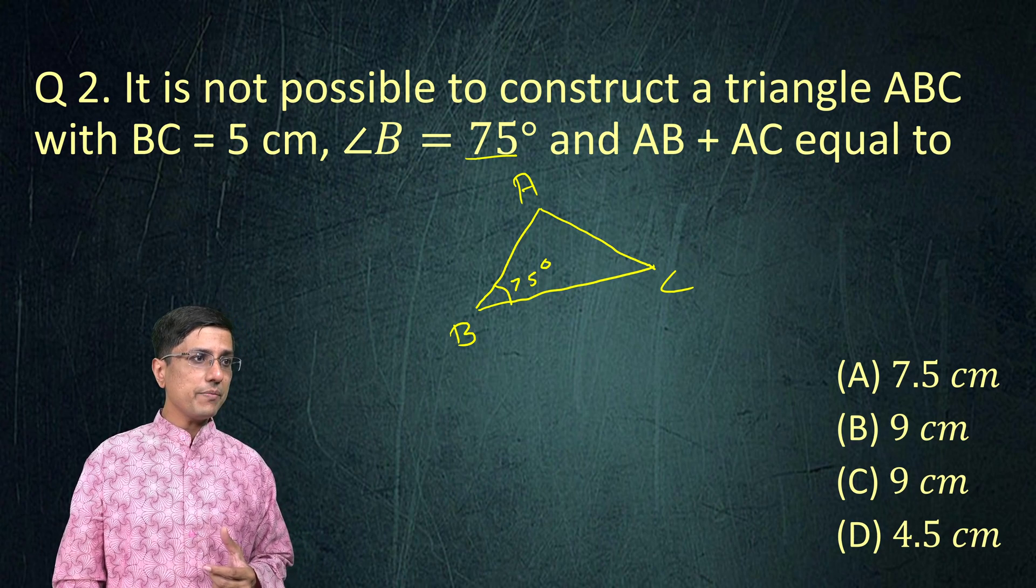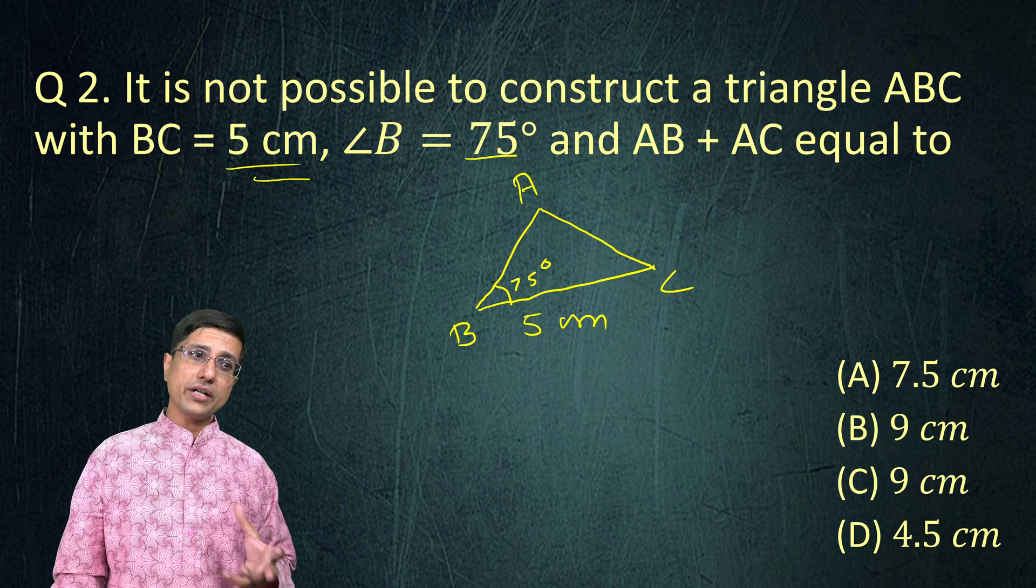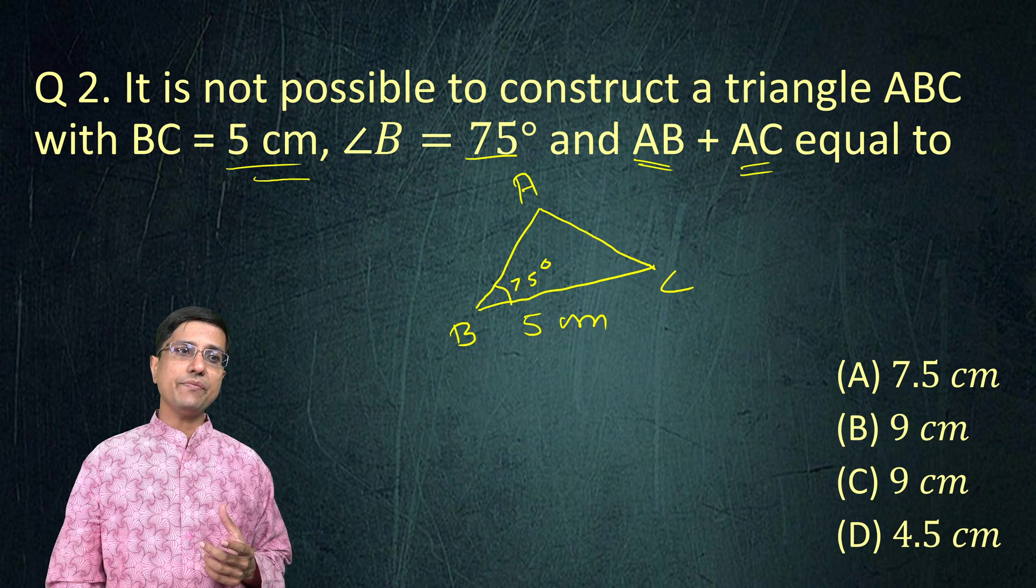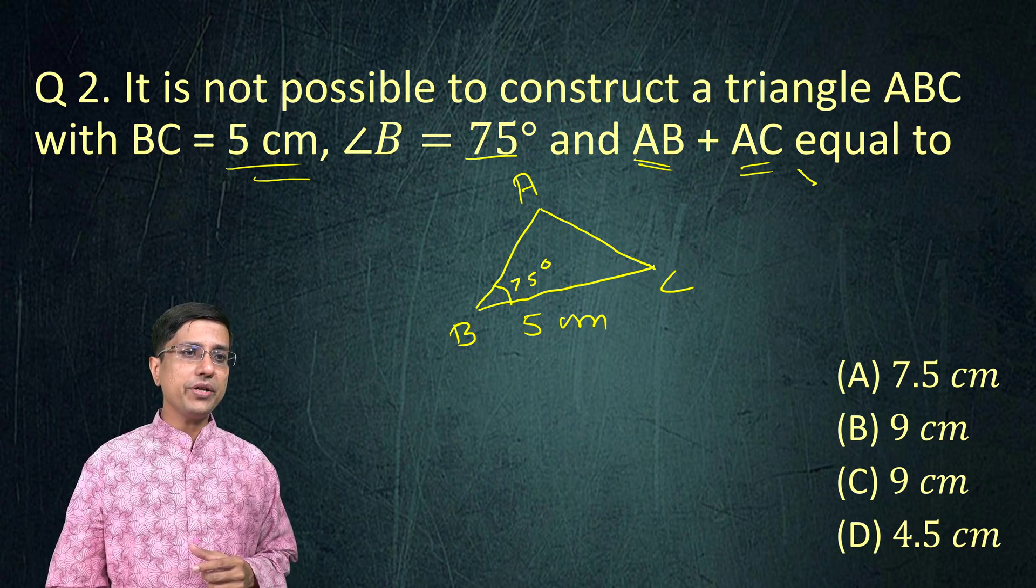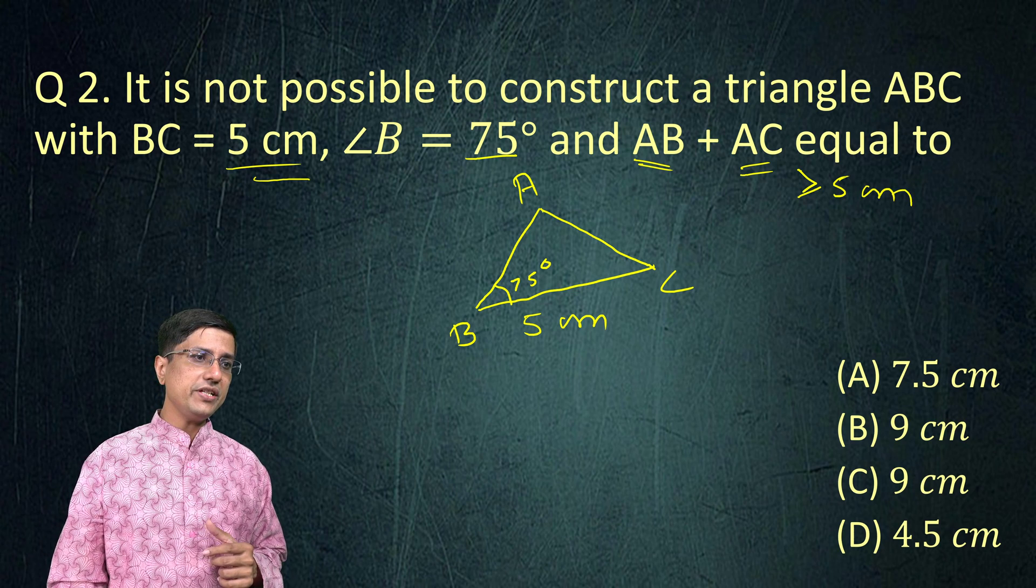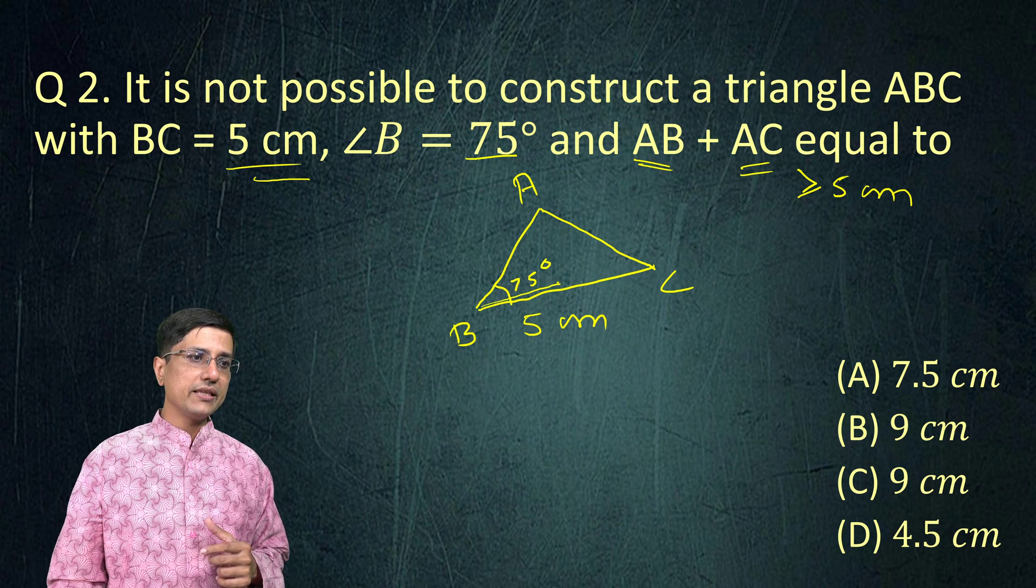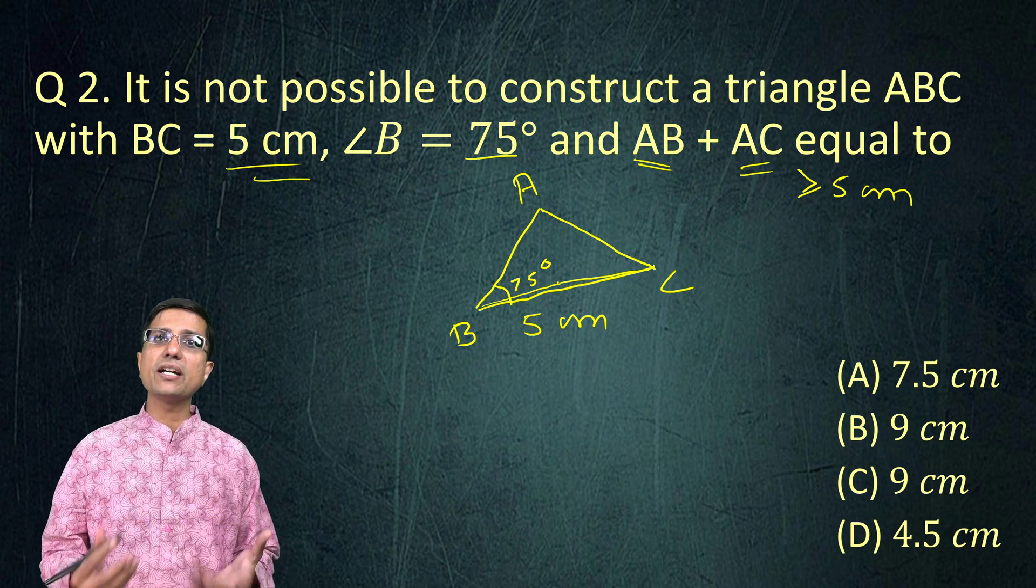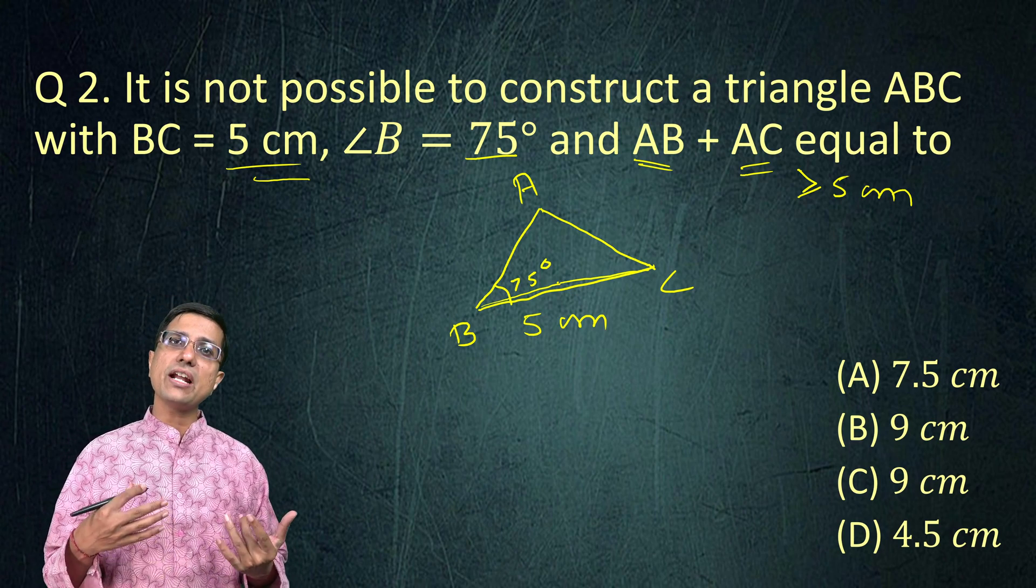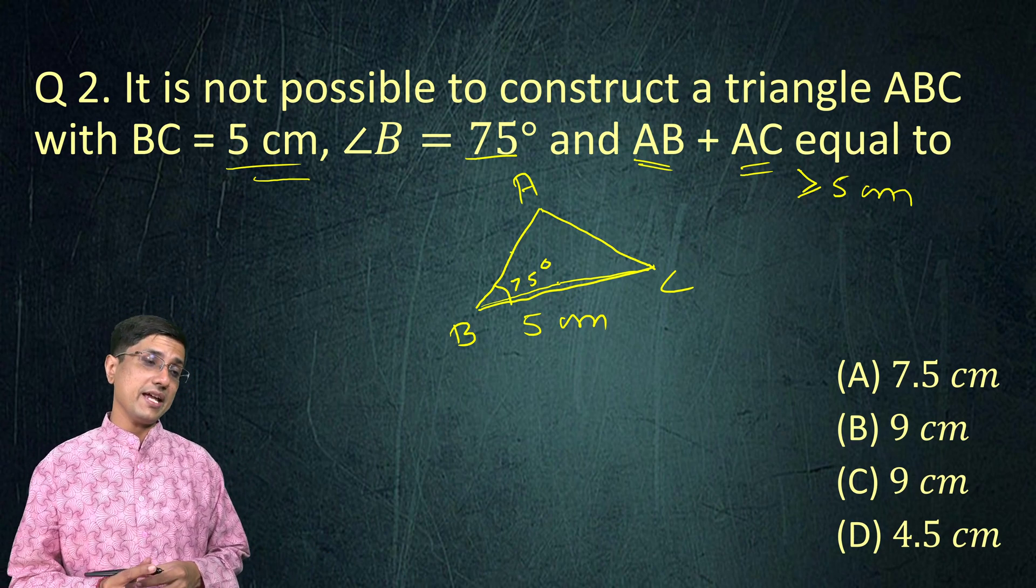So here, we are being told that this BC is 5 cm. Now, one thing to understand is that this BA + AC would always have to be greater than 5 cm. Think about it. Even if this A is a little bit above, then also this AB + AC becomes bigger than 5 cm. If this AB + AC is less than or equal to 5, then we don't even have a triangle. It would be like we'll only be able to reach halfway to A. We won't be able to reach A.